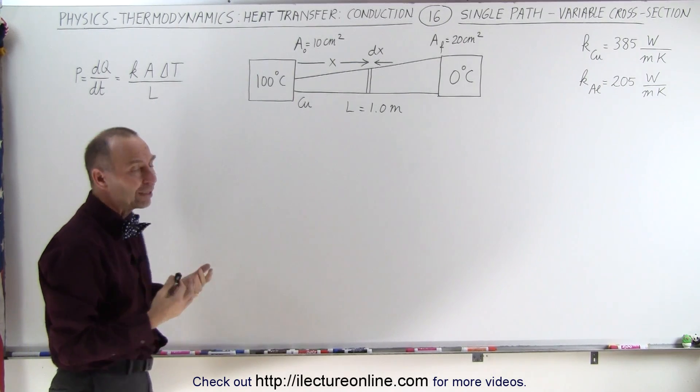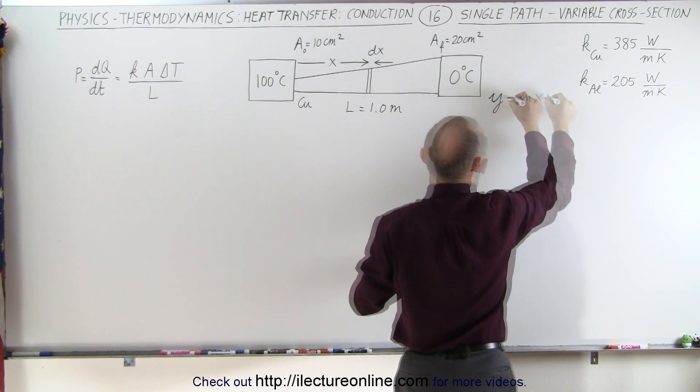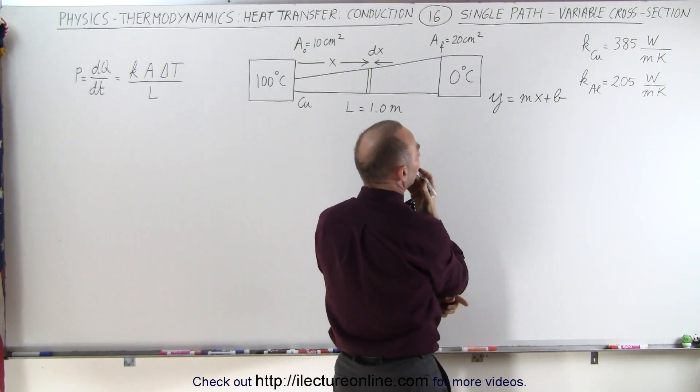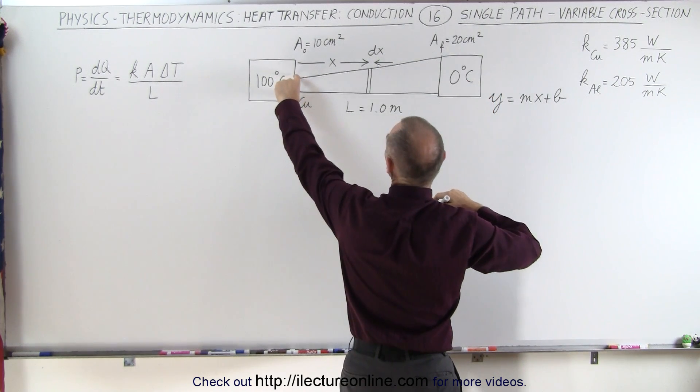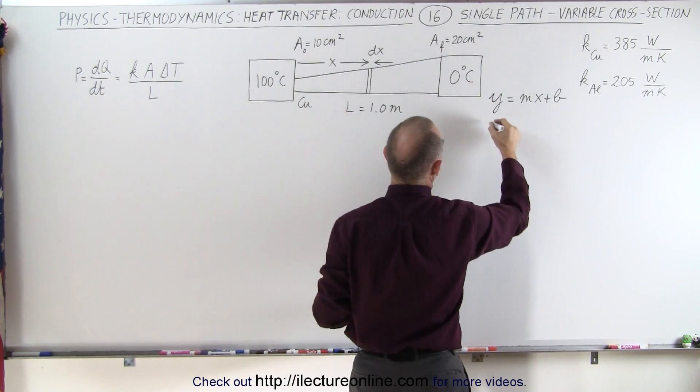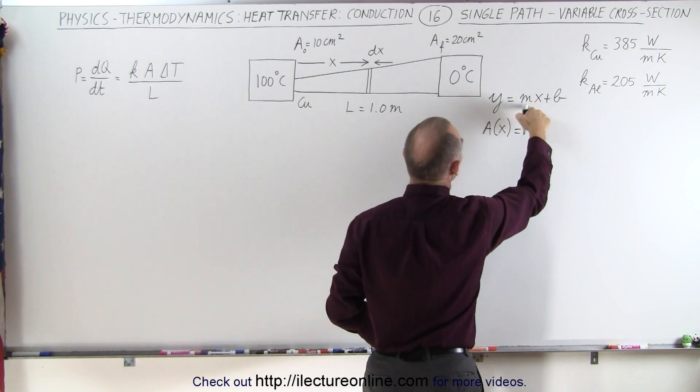And we can do it kind of the same way like we write the equation y equals mx plus b. So in this case, y is the vertical, so let's call that the cross-sectional area. So we're going to have the cross-sectional area as a function of x is equal to the slope times x.